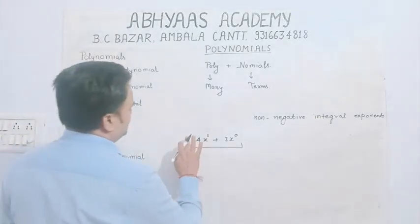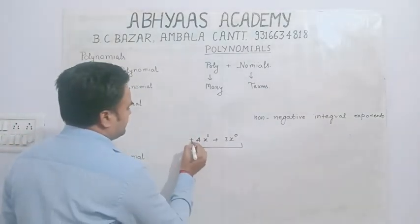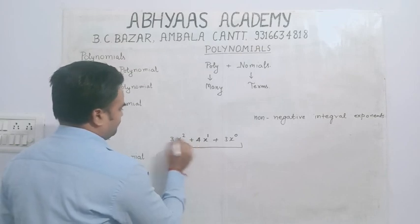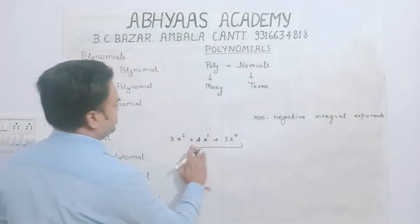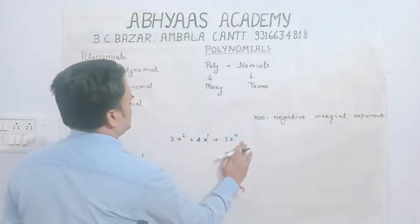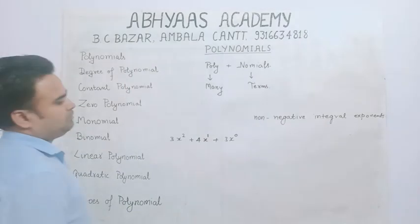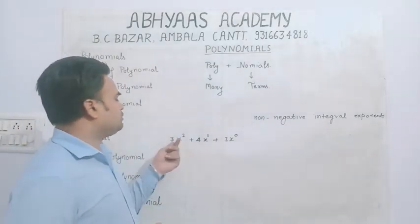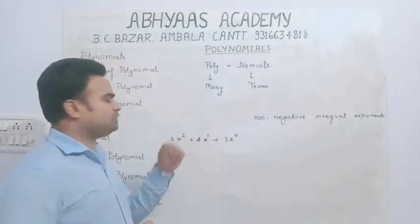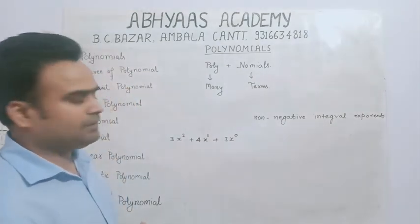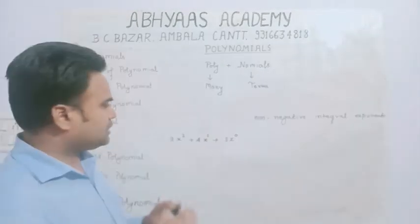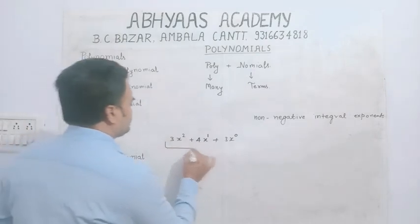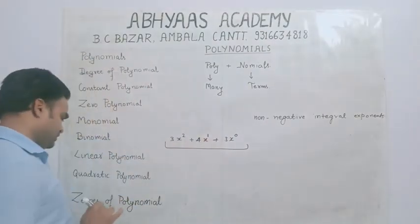Quadratic polynomial क्या होगा? अगर किसी expression में highest power 2 है, जैसे 3x² + 4x + 3 — इसमें variable x की highest power 2 है। तो अगर highest power 2 है, तो उस expression को quadratic polynomial बोलेंगे।